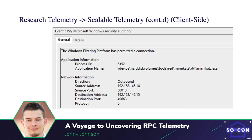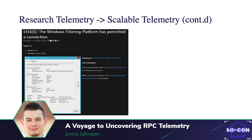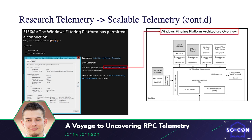That was particularly interesting — it correlated with the ETW and Procmon information I had. I didn't know much about the Windows Filtering Platform, so I decided to dive into it. Keep in mind the same information can come from Sysmon event ID 3 or any EDR product that collects network connections — the difference is you don't get to see direction, inbound or outbound, with Sysmon.